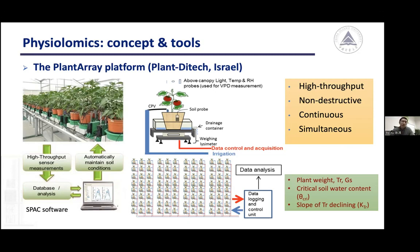Among the relatively simple yet critical parameters are soil water content and the slope of transpiration decline, which are among the complex traits. The critical soil water content is the soil water content at which a plant starts to close its stomata — it is an important indicator reflecting the sensitivity of the plant's stomata to soil drought. The slope of transpiration decline, on the other hand, reflects the speed of stomatal closure.